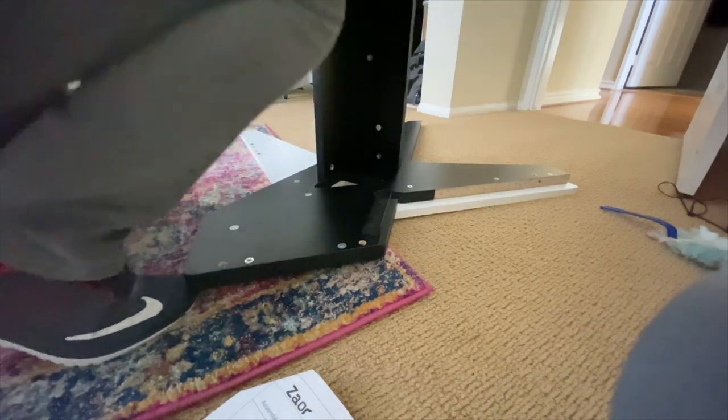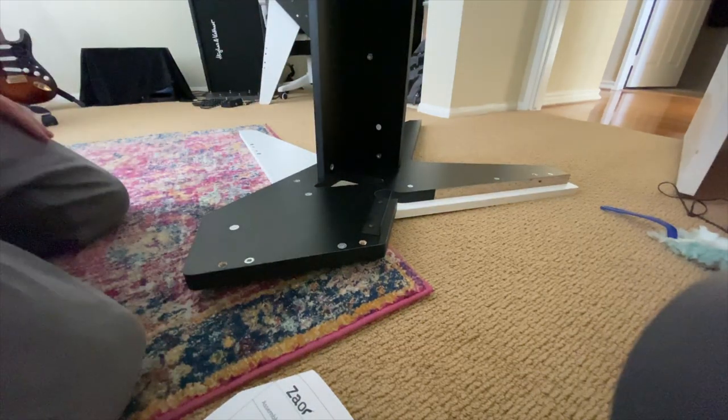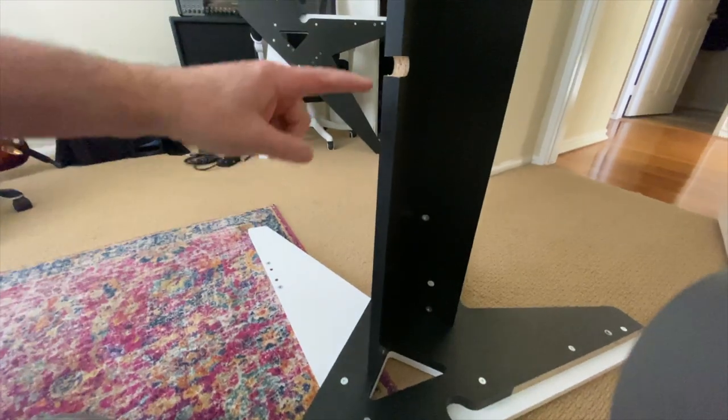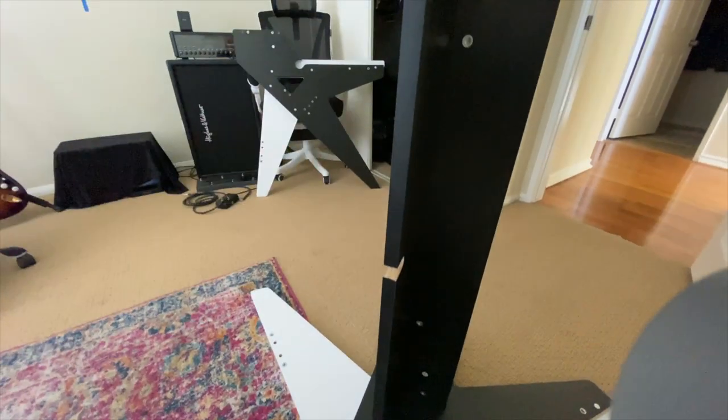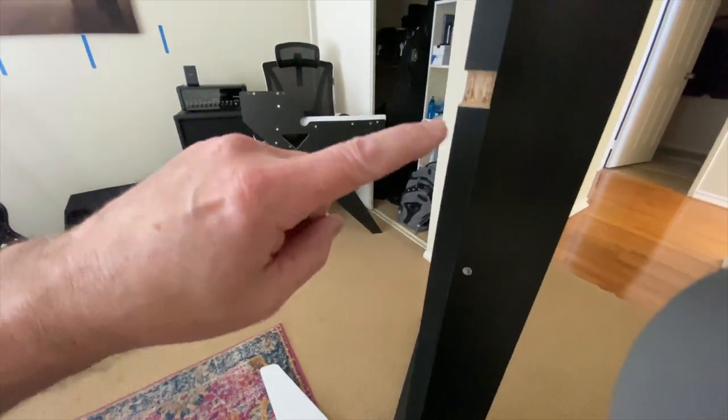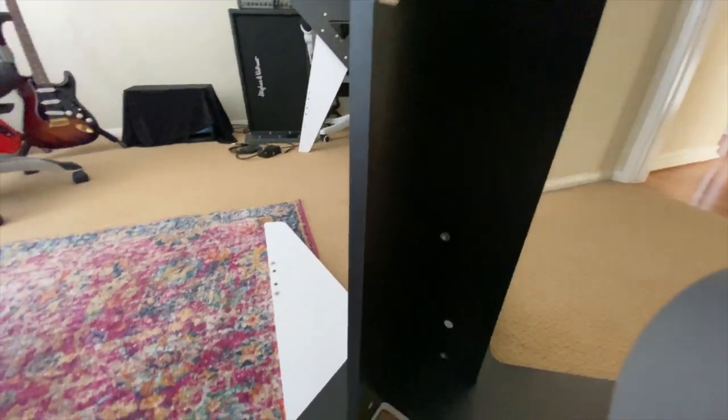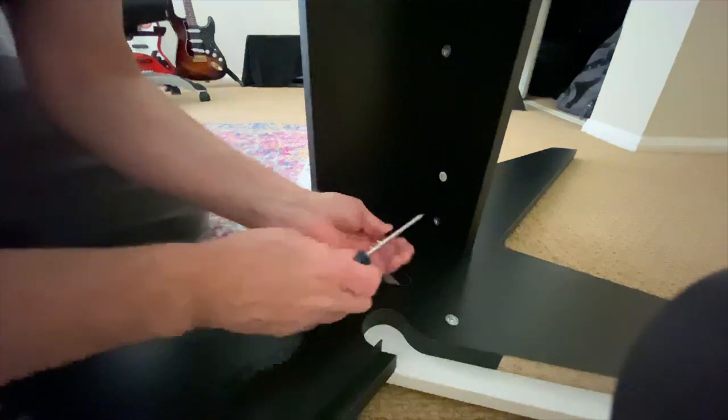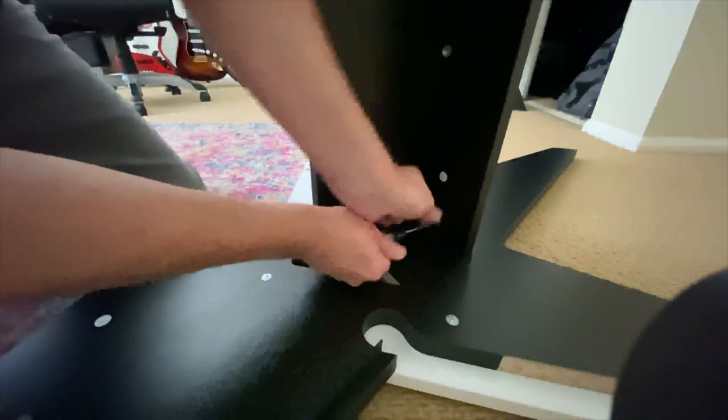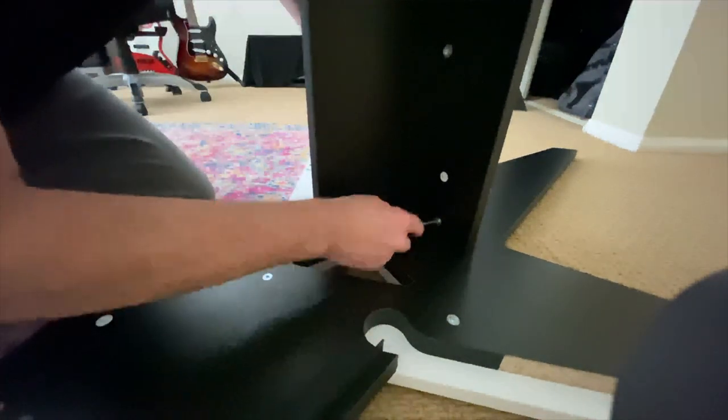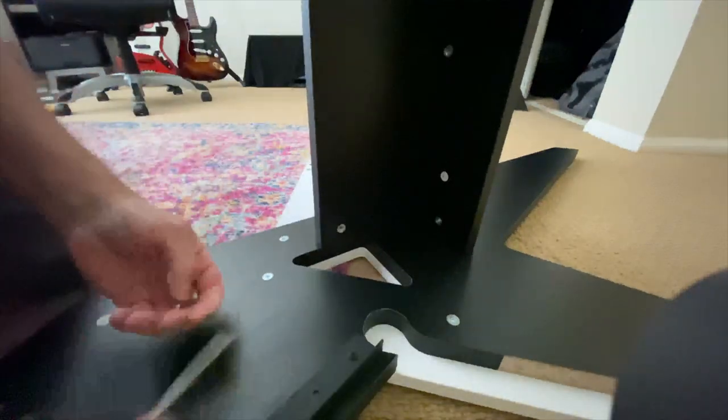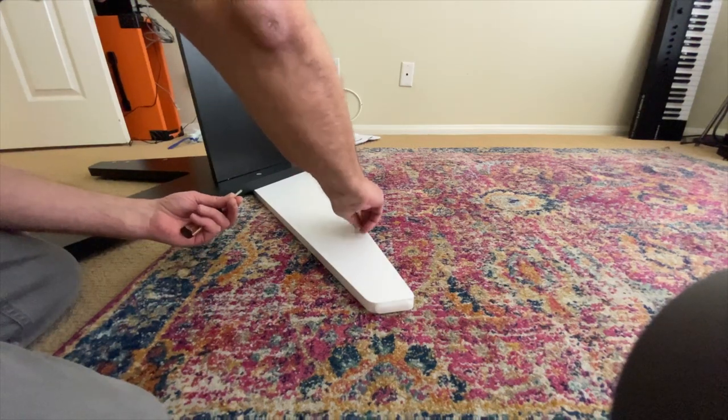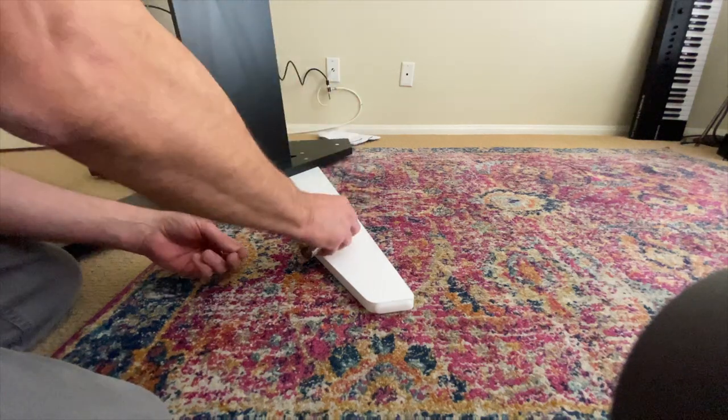You have to pay attention to these two notches. They have to be facing up on the cable management system because those are going to be where the rack supports click in. Then you can sock it down with the barrel screws.